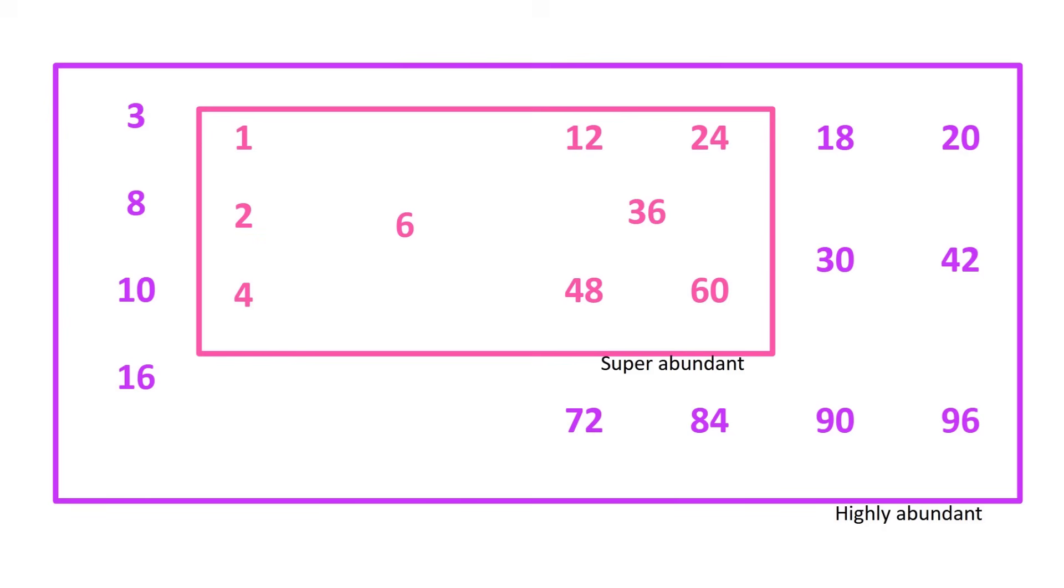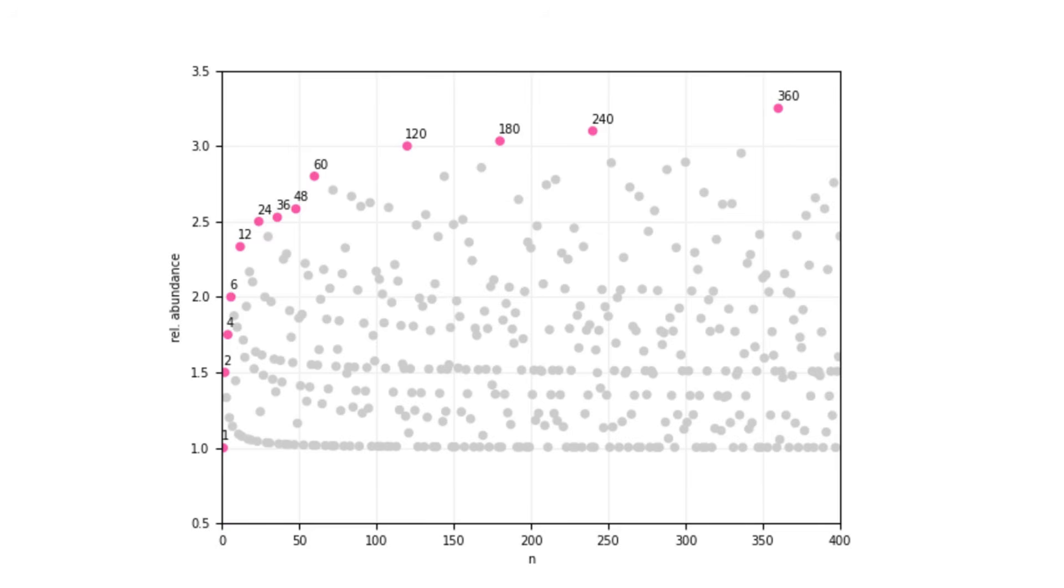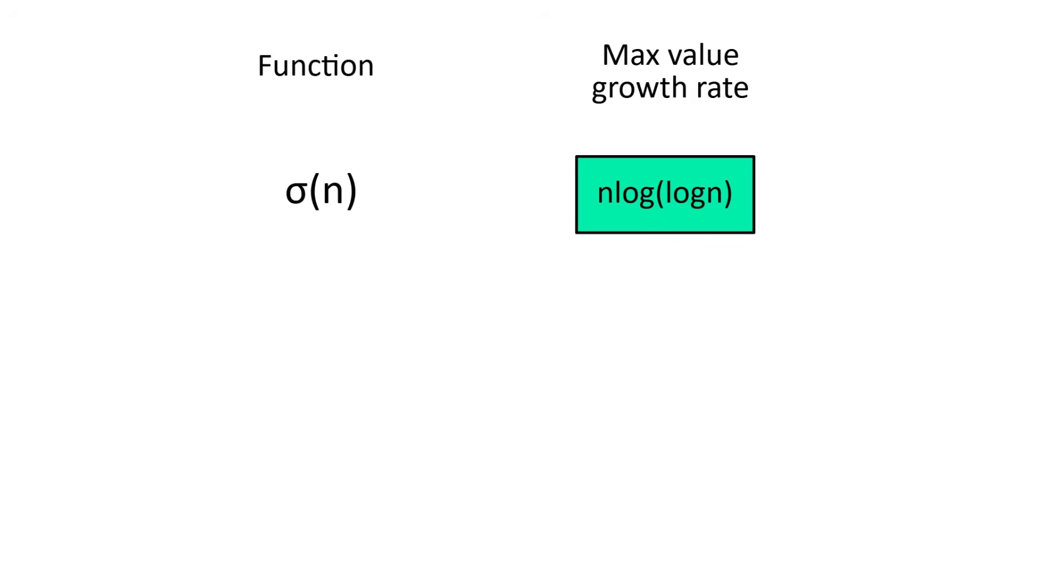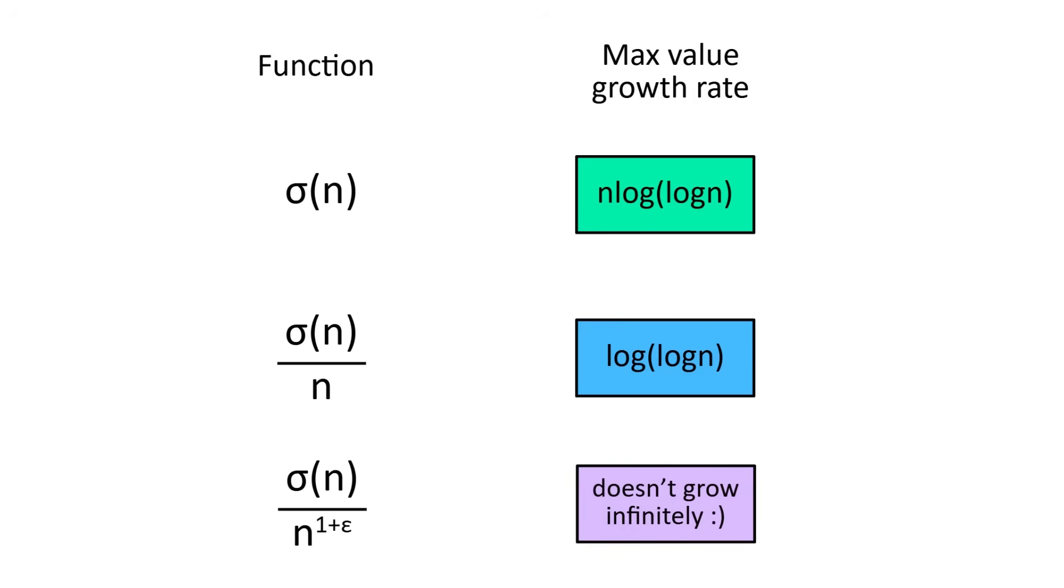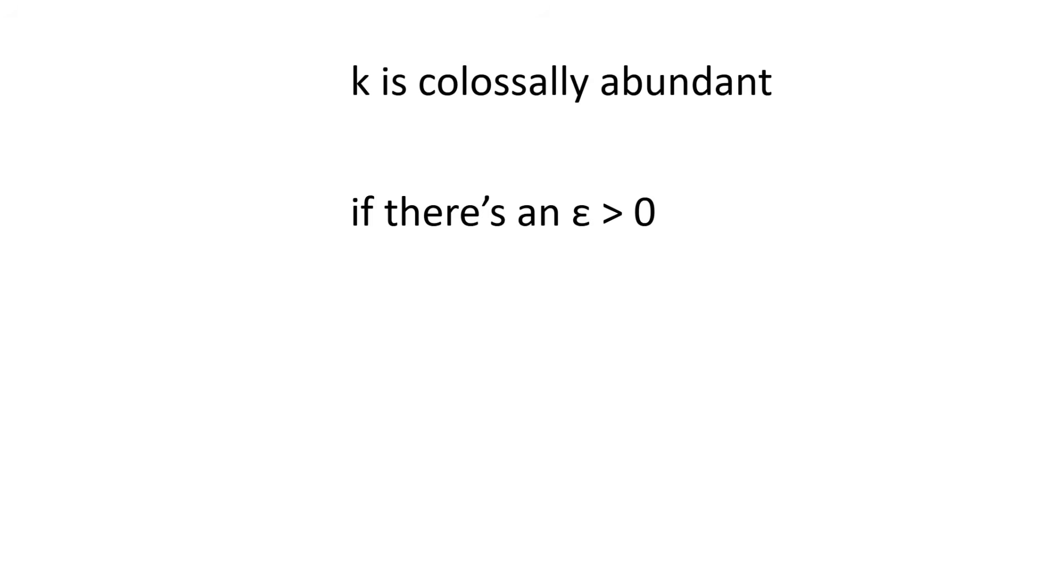Now there is an even more efficient subset of the superabundant numbers called colossally abundant numbers. So far, we've always looked at the highest value so far because none of the functions had an absolute maximum. But sigma of n has a growth rate of n log log n. Dividing it by n, the max value still grows infinitely, but dividing by n to a power even slightly more than 1 means the function will have an absolute maximum. Depending on what this value is, different numbers are given a time to shine. So we say a number k is colossally abundant if there's a positive epsilon, where sigma of n divided by n to the 1 plus epsilon reaches its absolute maximum at k. With this definition, colossally abundant numbers are quite rare.